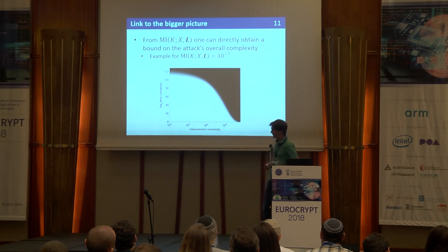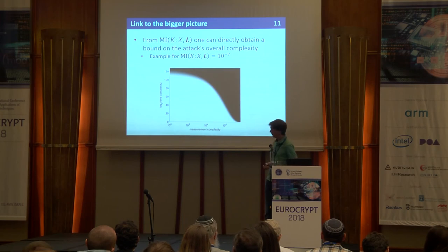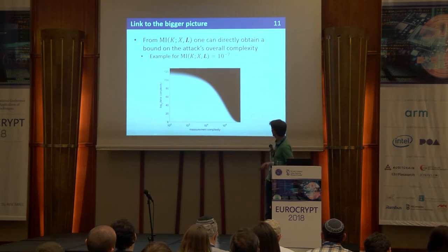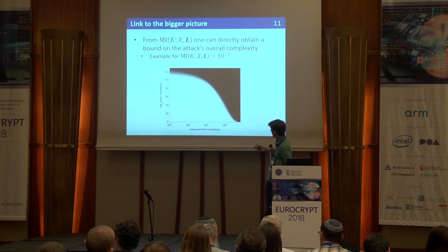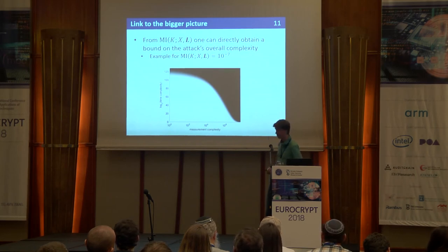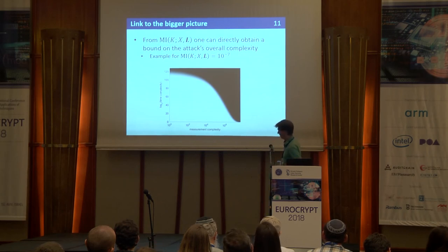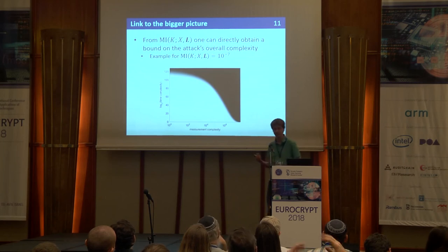There's also a direct link to the bigger picture: whenever you get the mutual information, you can connect it to works on key enumeration and key ranking and obtain bounds for the security graph. For example, if mutual information is 10^-7, the corresponding security graph shows that with a bit more than 10^7 measurements you recover the key.